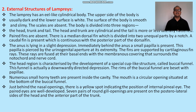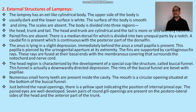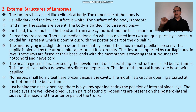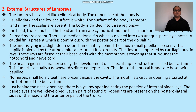The lamprey has an eel-like cylindrical body. The upper side is usually dark and the lower surface is white. The body surface is smooth and slimy because scales are absent — there is no exoskeleton. The body is divided into head, trunk, and tail. Head and trunk are cylindrical; the tail is laterally compressed. Paired fins — both pectoral and pelvic — are absent. Median fins include two dorsal fins and one caudal fin, which are the locomotory organs. The anus lies in a slight depression on the ventral side, and immediately behind the anus a small papilla is present, pierced by the urogenital aperture.